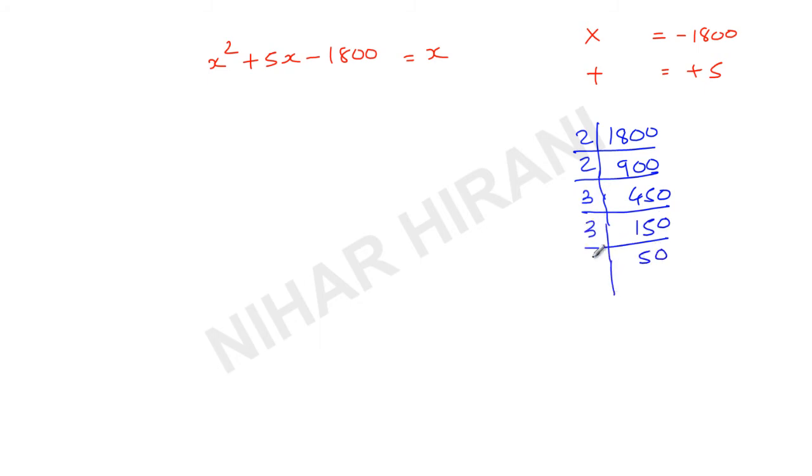That's it, you can go in any other order also. Here you can continue by 2 also because these are even numbers. But it's okay, you can go in any order. Now you need to find two groups in such a way: if you multiply you get 1800, and if you add you get 5.